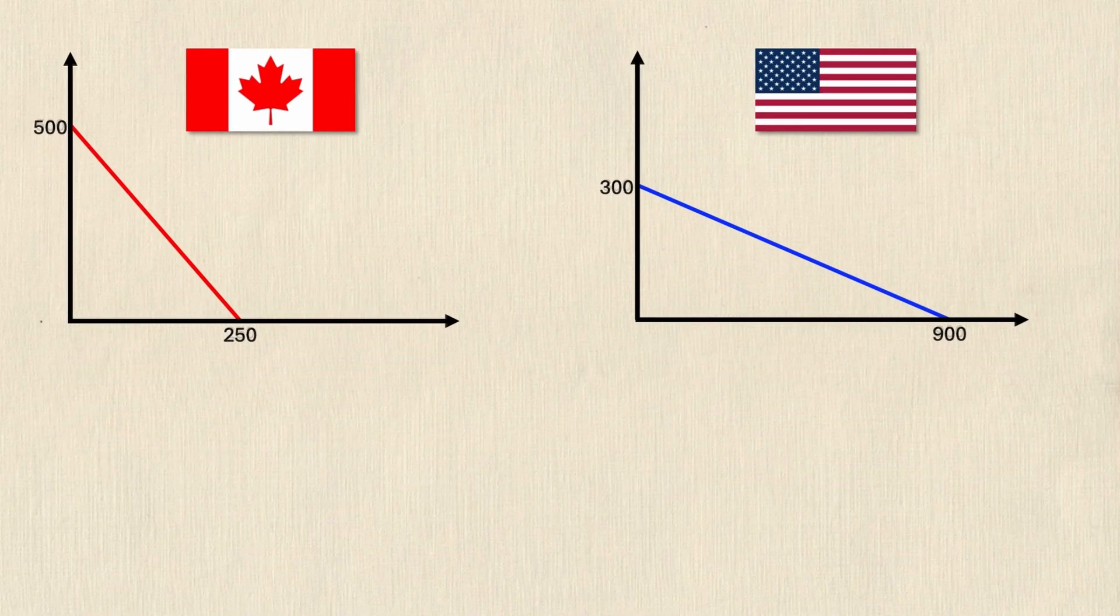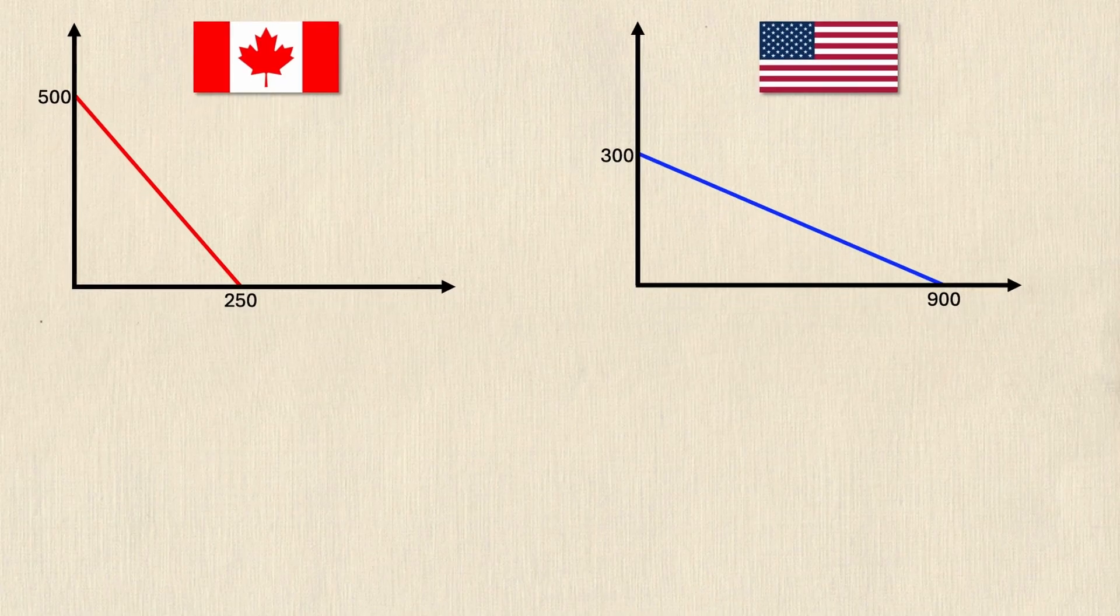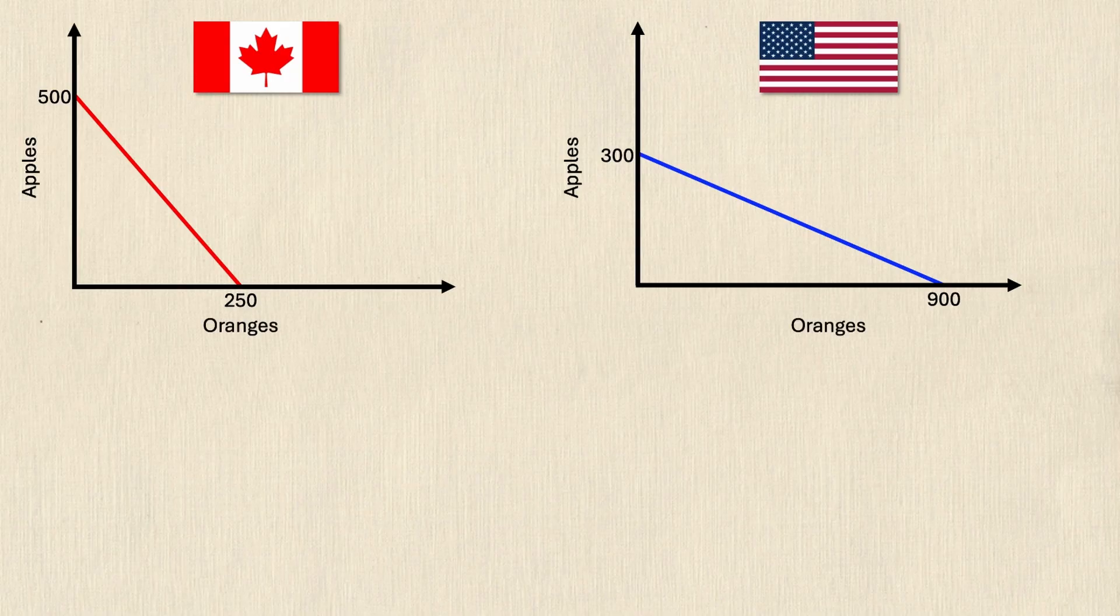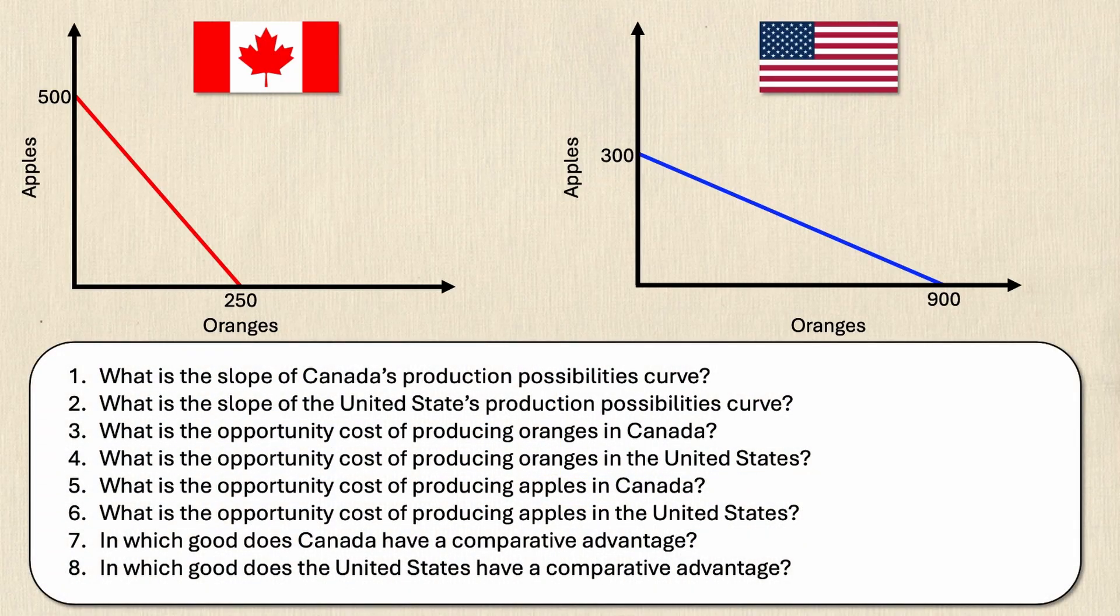In our example we have two countries: Canada on the left and the United States on the right. As you can see we have linear production possibilities frontiers with apples on the vertical axis and oranges on the horizontal axis. We're going to use these two graphs to answer these eight questions.